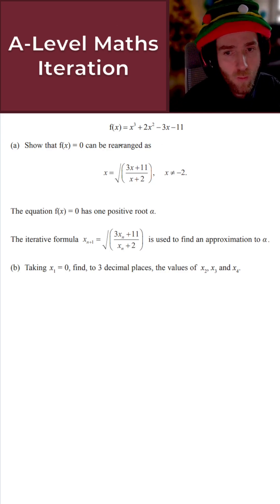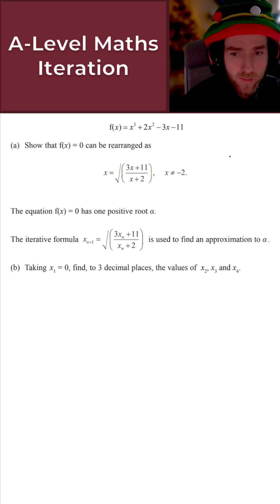Pretty standard stuff for this question here. What I've got is f of x, which is this cubic polynomial here. And then for the first part of the question, part a, we just want to show that f of x equals 0 can be rearranged as the following.